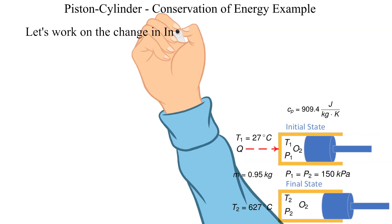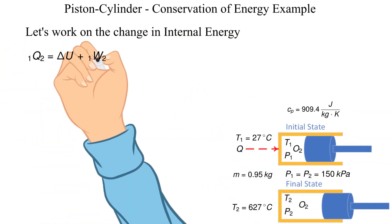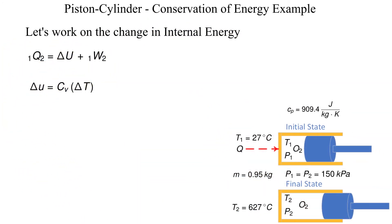Now let's come up with an expression for the change in internal energy. Treating the oxygen as an ideal gas we know that the internal energy only depends on the absolute temperature. The equations to calculate the change in internal energy are shown. Note that since we are calculating the change in internal energy we will be using the change in temperature.